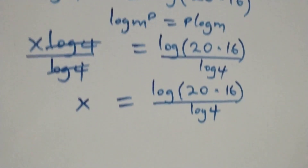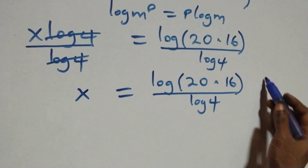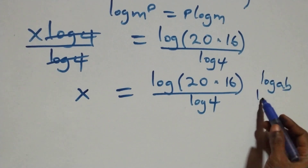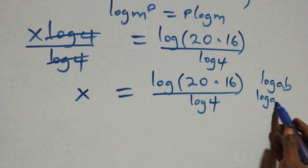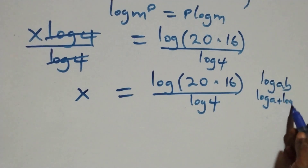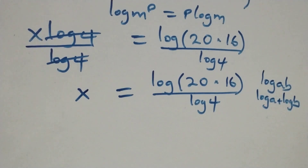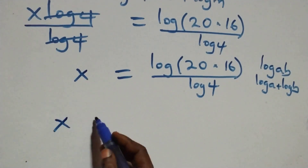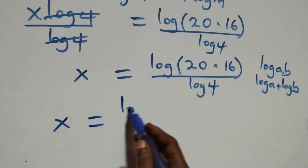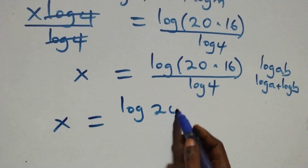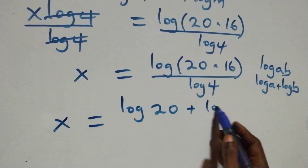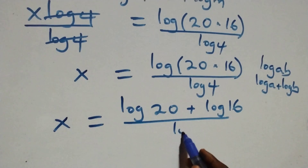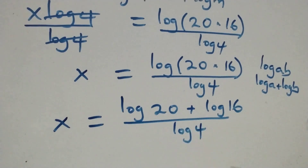This follows from the logarithm product rule: when we have log of a times b, it equals log a plus log b. So what we have becomes x equals log 20 plus log 16, all over log 4.